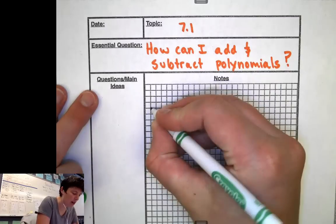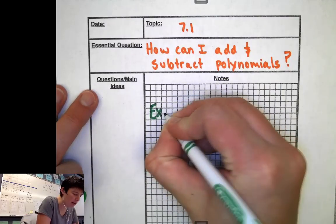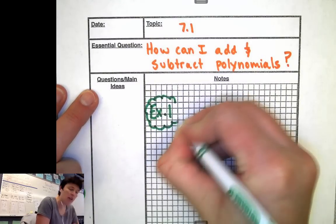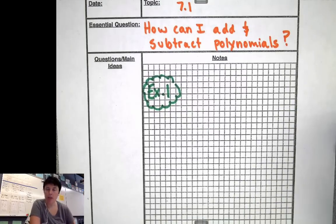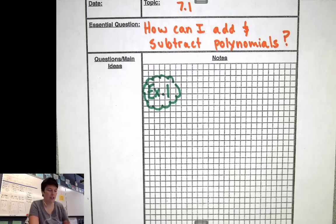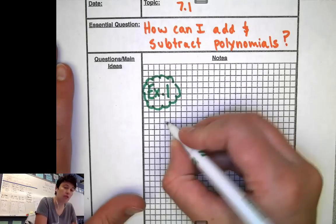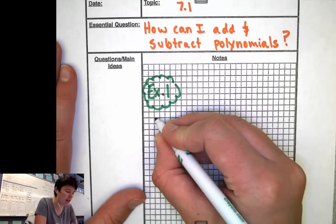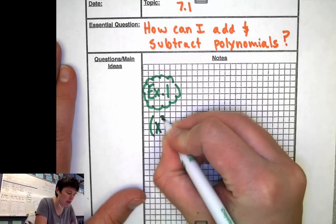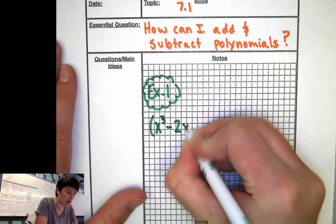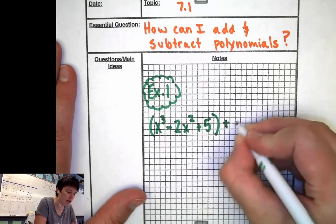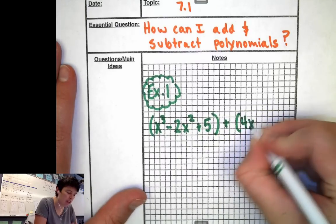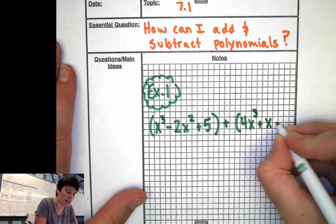I'm going to give you an example of what I'm talking about. So we'll write Example One. I'm talking about adding expressions together. I'm not solving for x because there's no equal sign involved. Here are two expressions that I am going to add together. The first one is: x to the third minus 2x squared plus 5, plus another parenthesis, 4x to the third plus x minus 7.